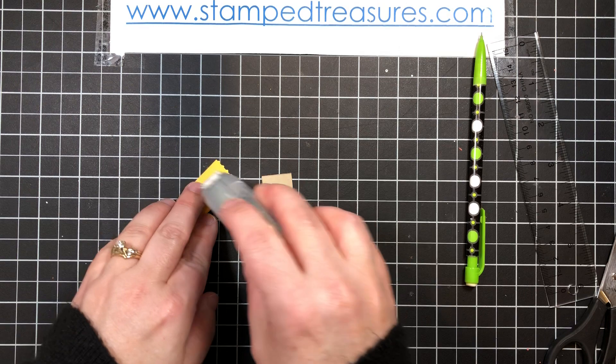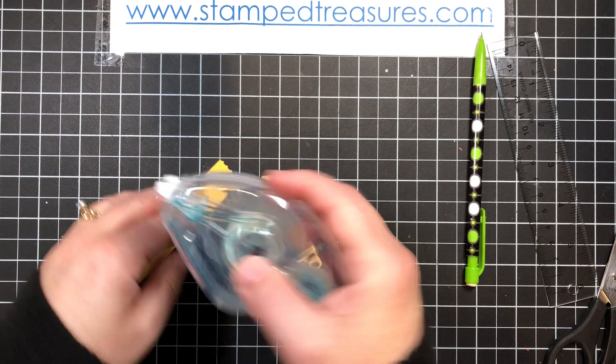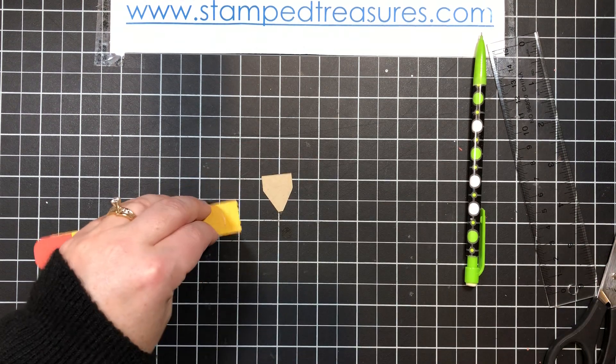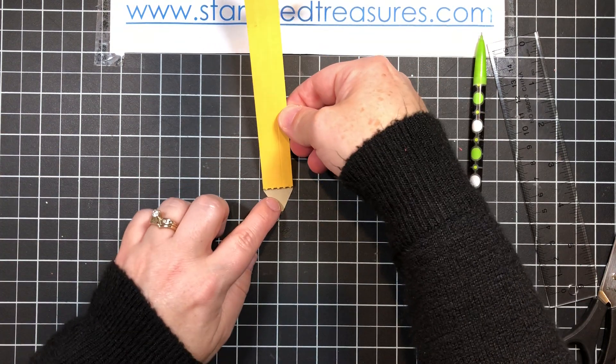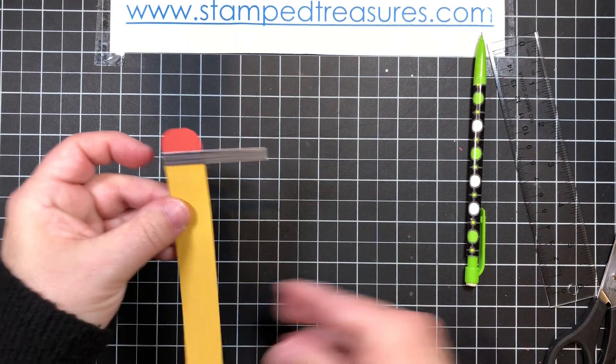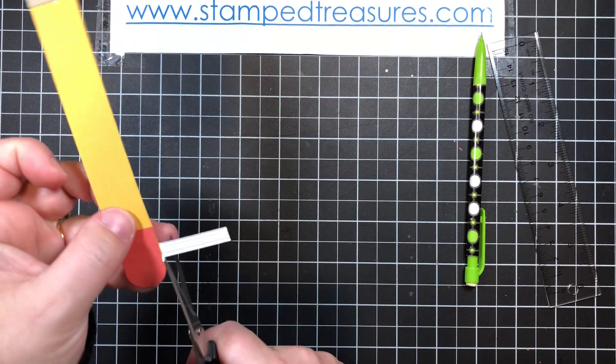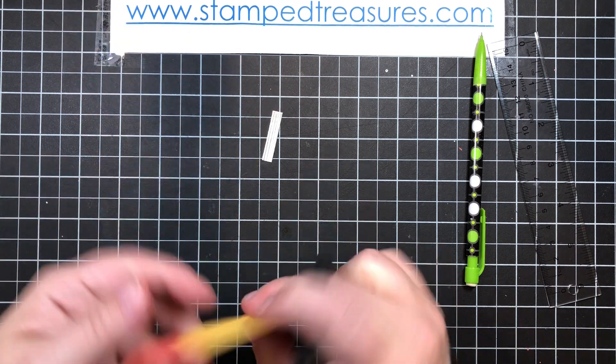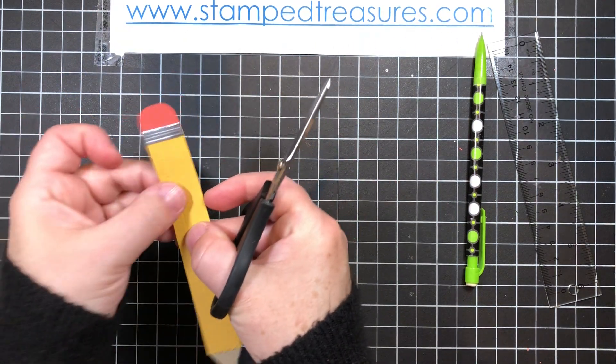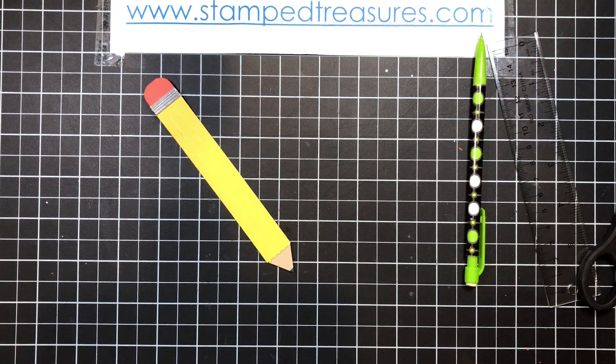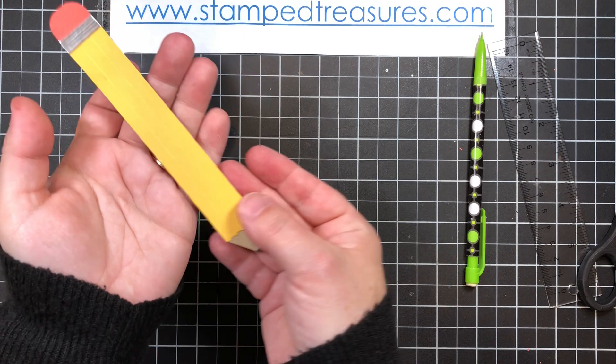Flip this over, add a little bit of adhesive to the back. And then this goes on like this. We can trim this off. And there's our pencil. Looks like I got a little bit of a black smudge there but that's okay. So there we go. There's our fun little pencil.